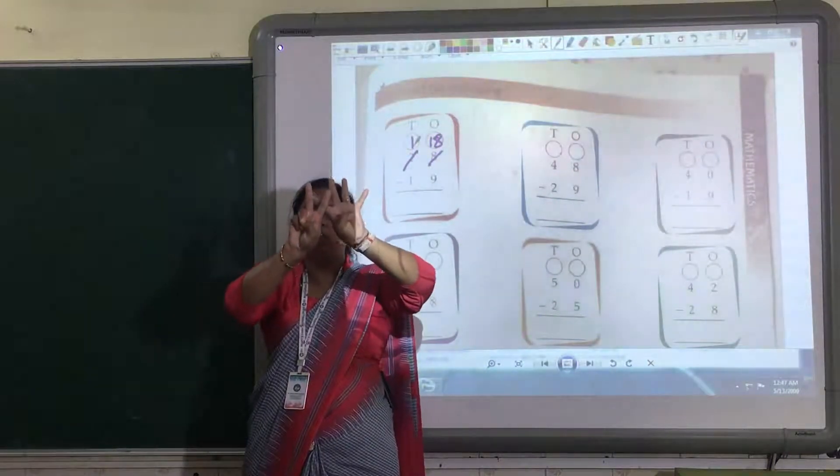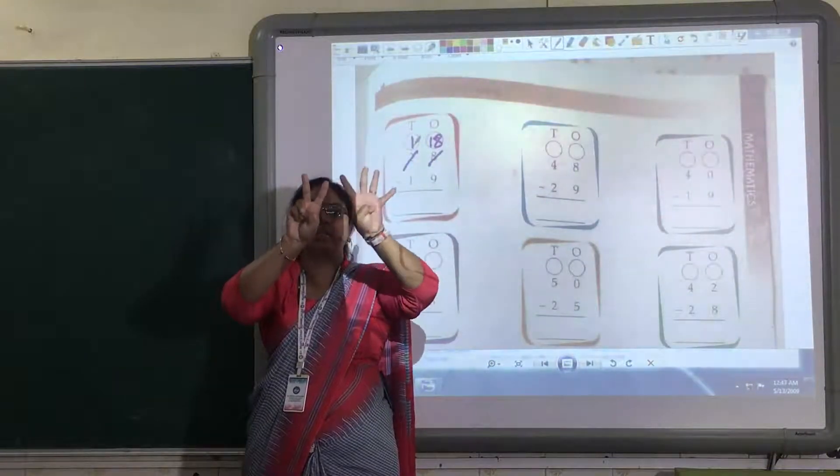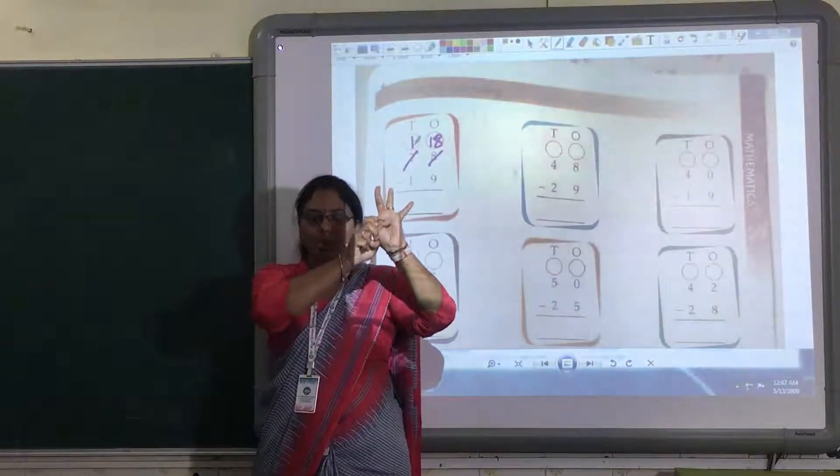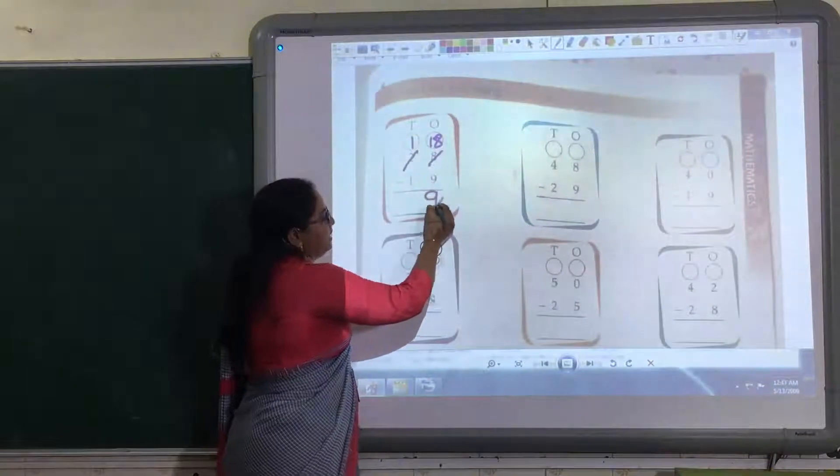As I told you, in 1 finger, we have 3 cubes. 1, 2, 3, 4, 5, 6, 7, 8, 9. We have minus. So, how many are remaining? 9 are remaining. So, here your answer is 9.